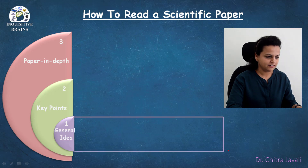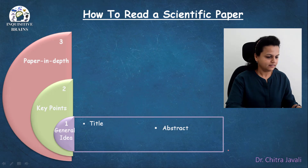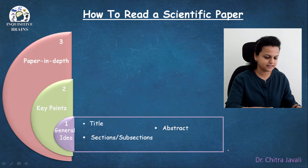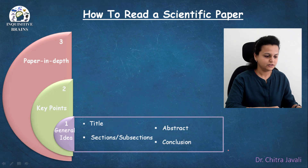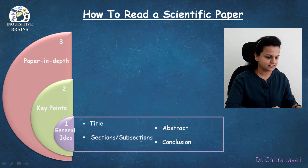In Step 1, first you read the title of the paper, and then you go through the abstract. Read the sections and the subsections — that is, only the titles of the sections and the subsections. So rather than going line by line, you are first going through the title, abstract, the titles of the sections and subsections, and the conclusion.